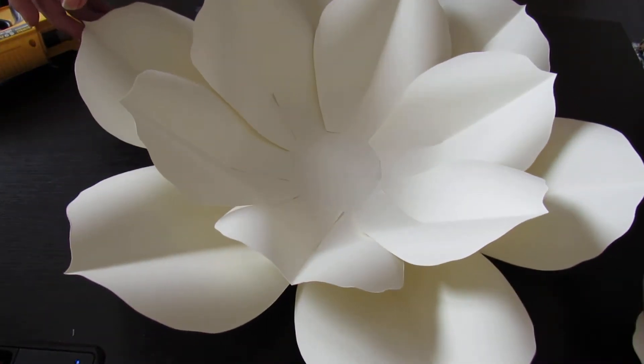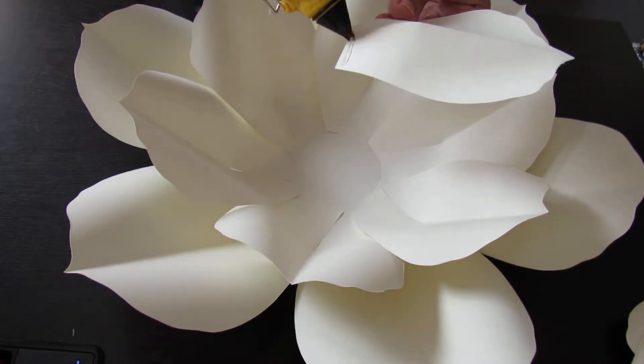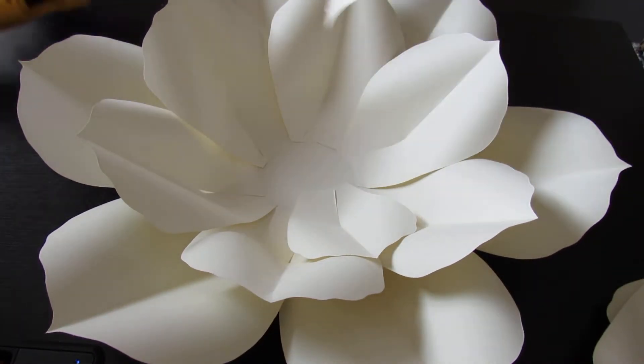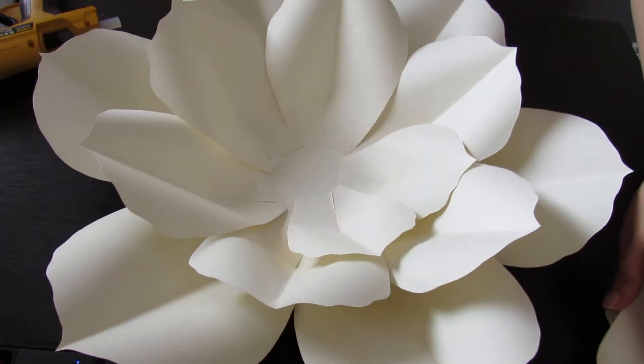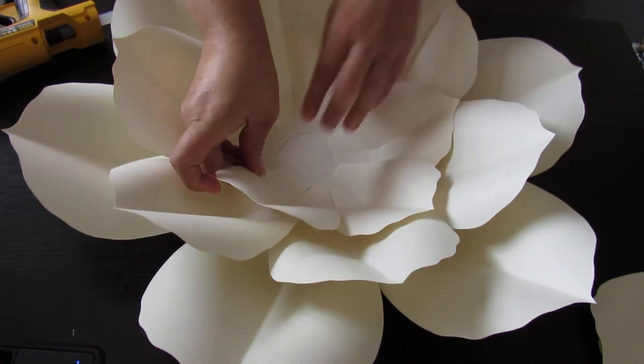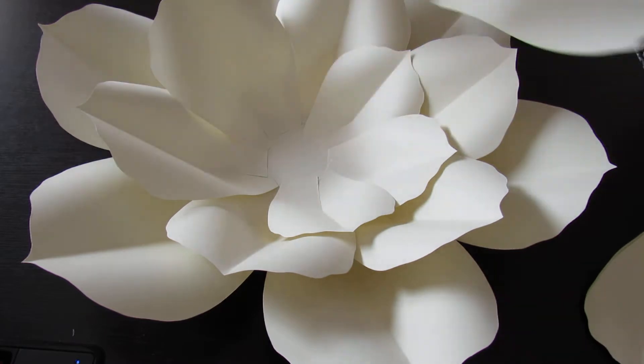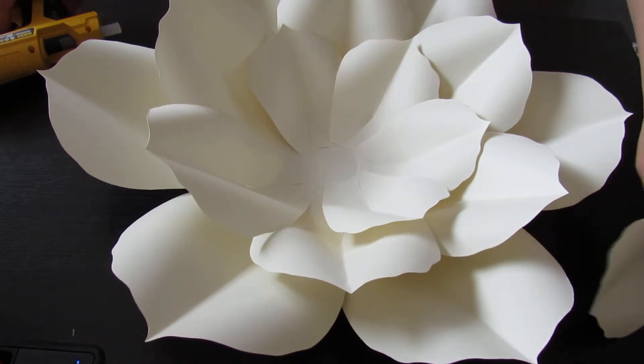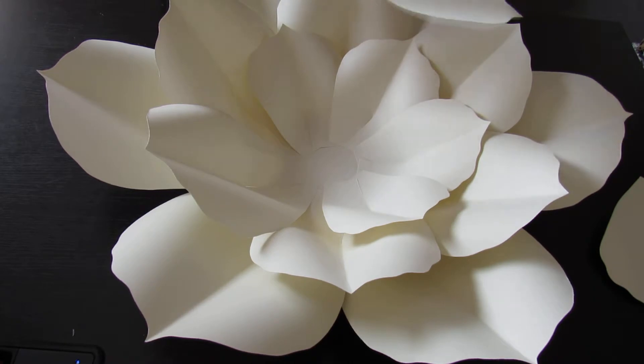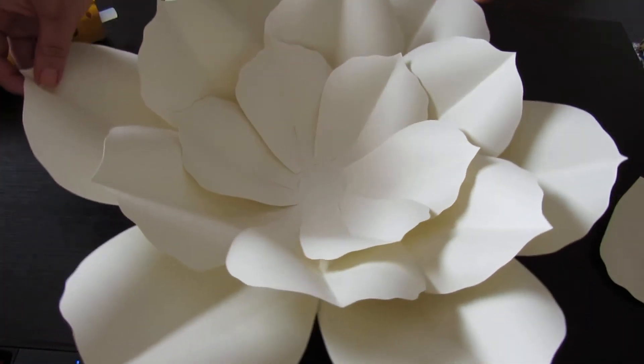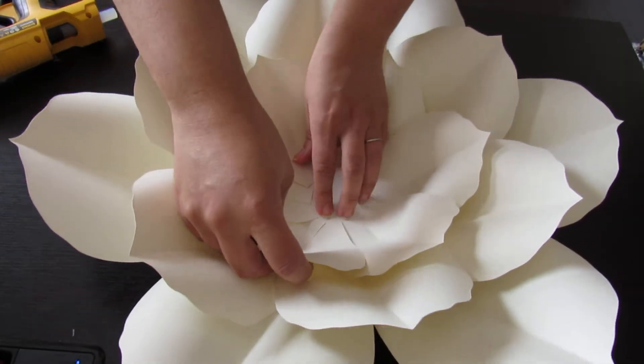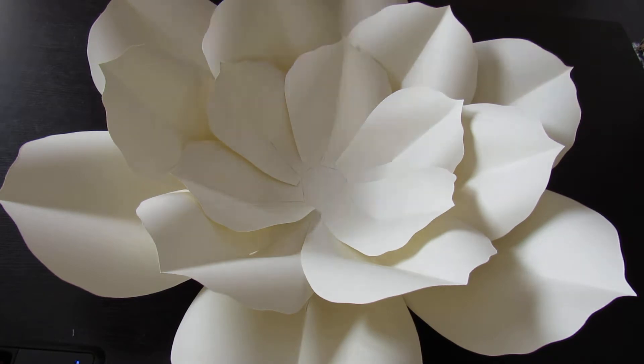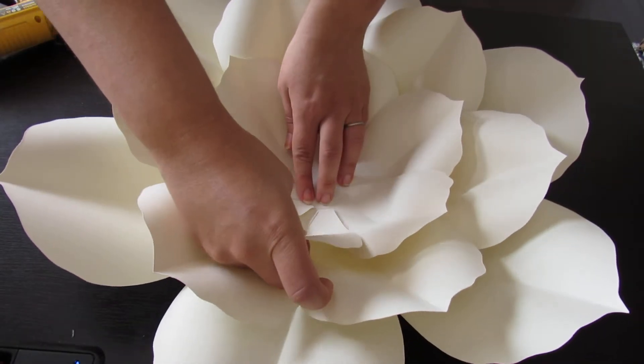Now grab your last petals, your smallest ones. Same thing, go in between. Now for this one, whenever I get to my last ones, I always like to tuck it in underneath the other one. Just lift it up slightly, that first petal you laid, and just tuck the other one underneath.